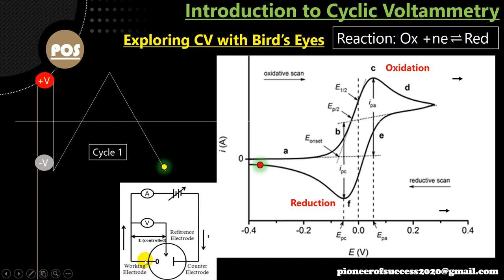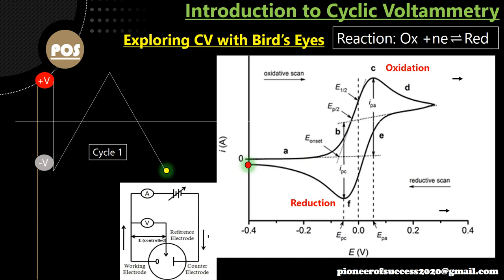The voltage is applied across the working electrode and the reference electrode, while the ammeter is placed across the reference and counter electrode to measure the current passing through the counter electrode. Initially, the current is almost zero — the electrode behaves like a capacitor in this region. The current stays very low until a point called E onset, where the reaction starts happening.